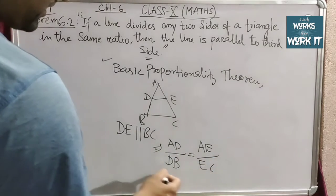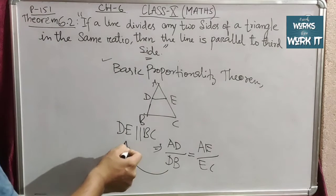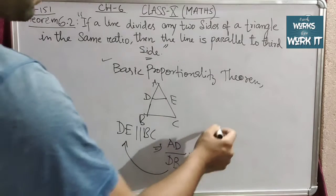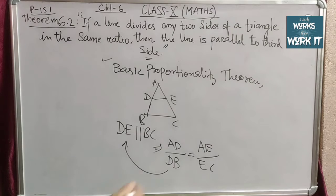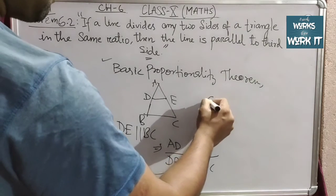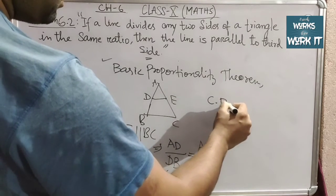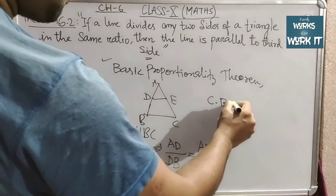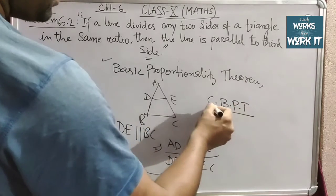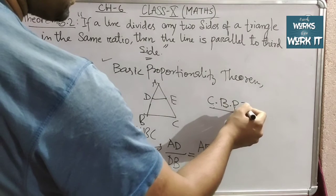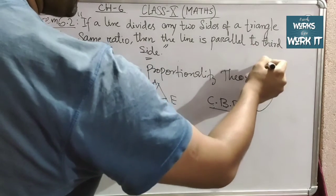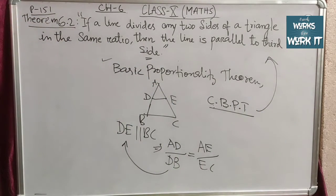If we take the reverse form of BPT — going from the result back to the condition — that becomes the opposite of the Basic Proportionality Theorem, which is called the Converse of the Basic Proportionality Theorem. This is given as Theorem 6.2, or we can directly write it as the Converse of the Basic Proportionality Theorem.